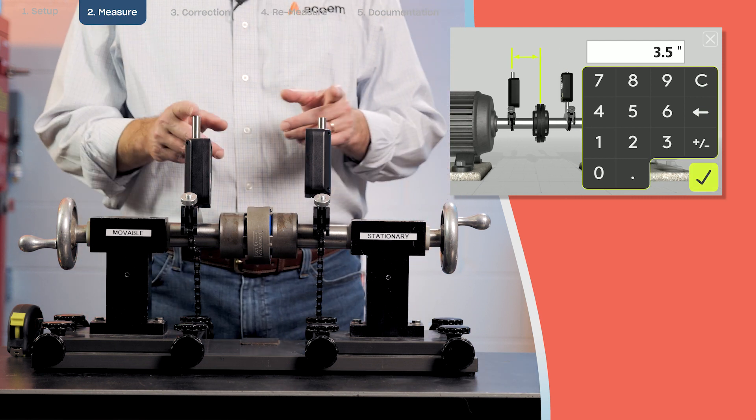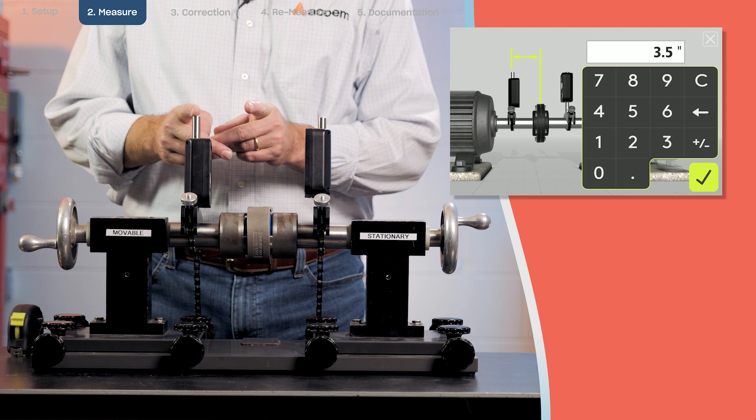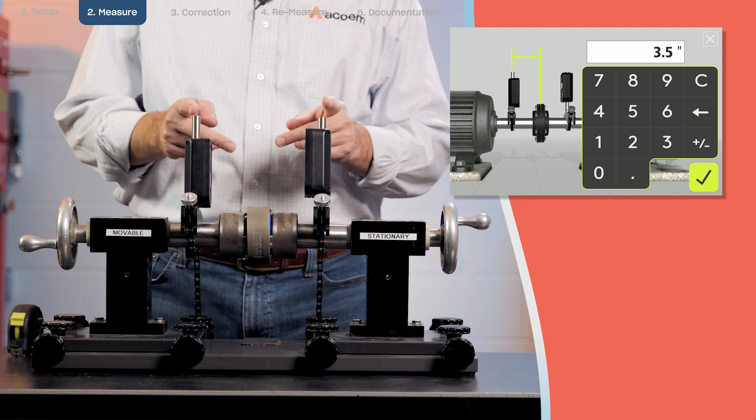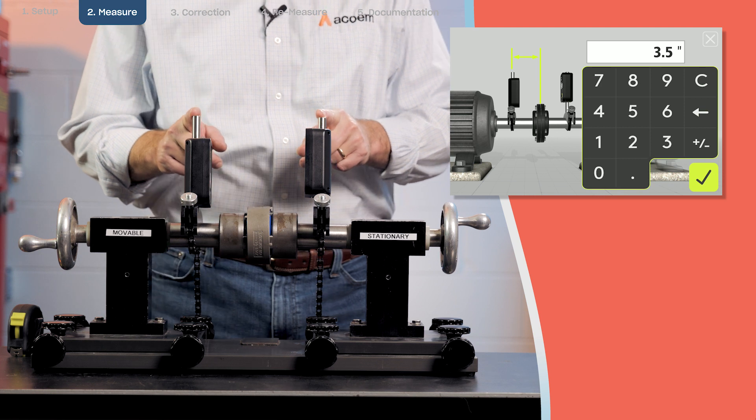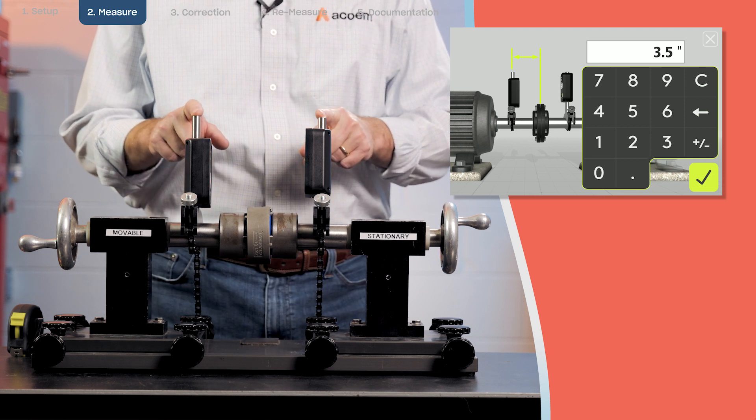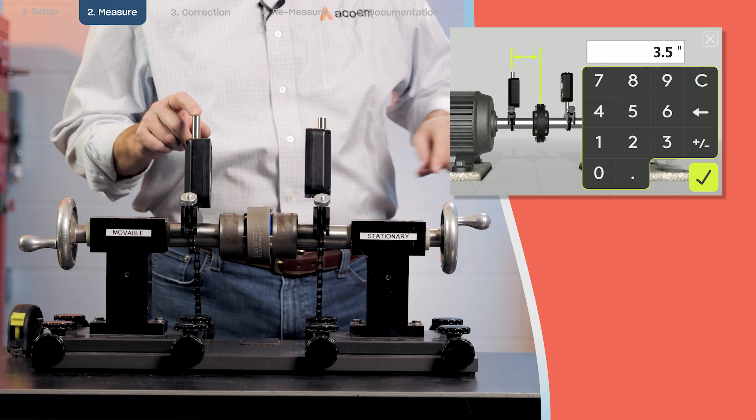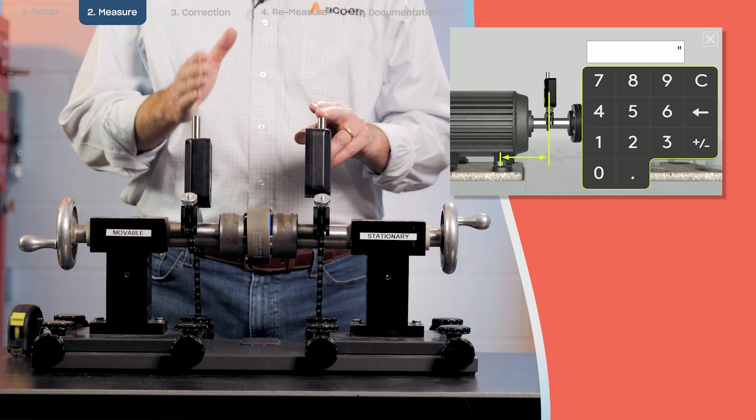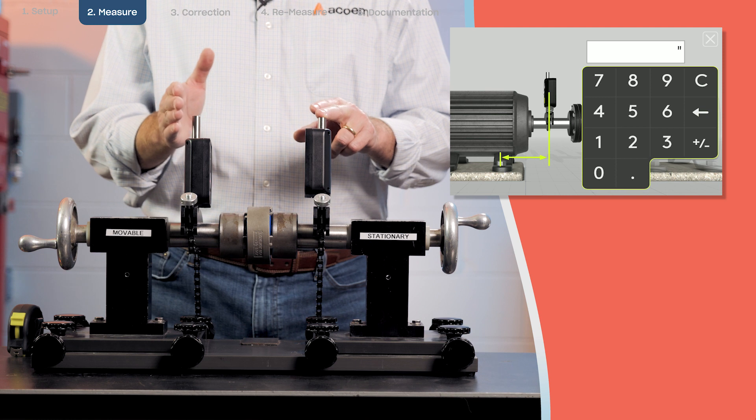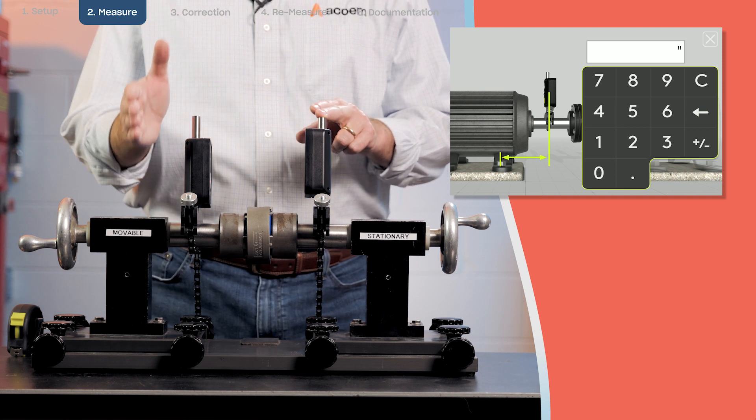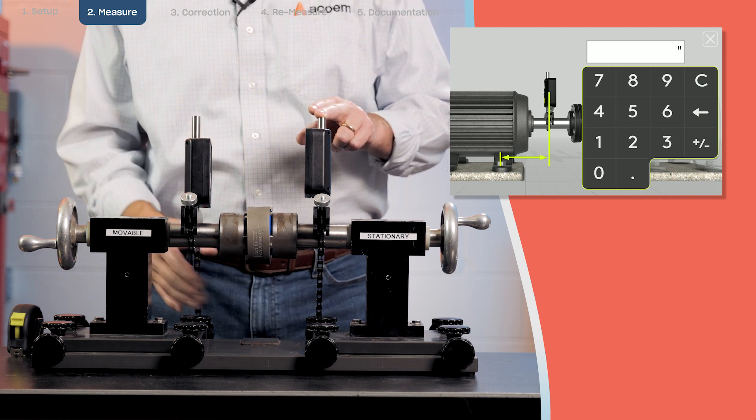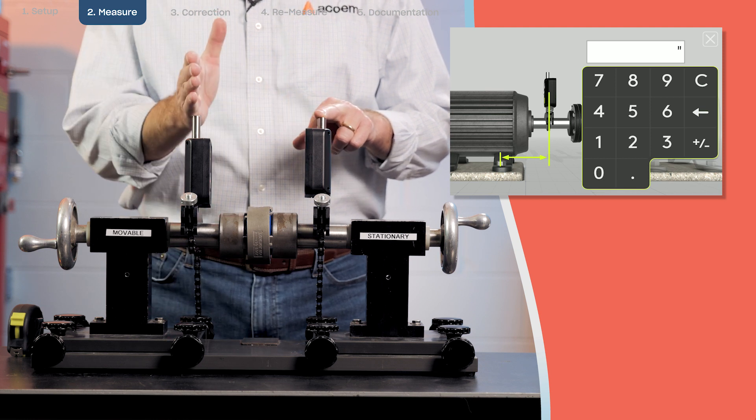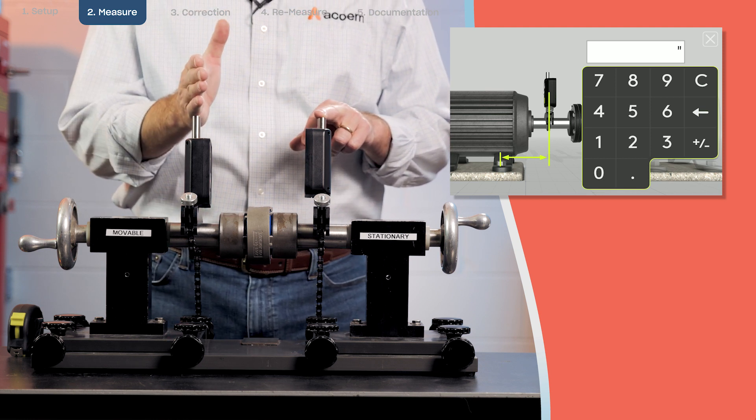The next dimension is from M sensor to the center of the coupling. In this case I have the default value of half the distance between the S sensor and M sensor. If it's not, you can change that to what the actual measurement is. Then we have from M sensor to the front feet of the movable machine or the motor. In this case you can see if I use my chain as a plumb bob that my M sensor is straight over top of my motor feet.